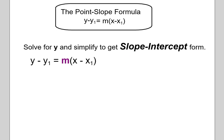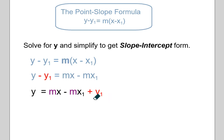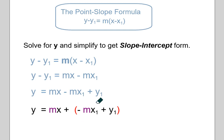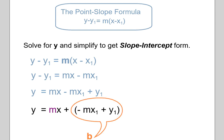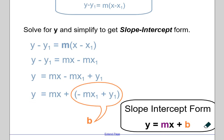Slope-intercept form is very easy because you always just solve for Y. If you distribute the slope, you get MX minus M times x sub 1. Then if you add y sub 1 to both sides and pull all your regular numbers together — once you plug in certain information and simplify by combining them into another regular number — then you will have your Y intercept, and you have it in slope-intercept form: Y equals MX plus B.